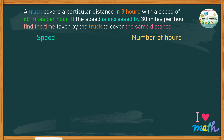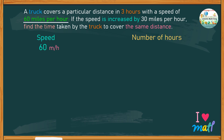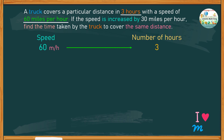Apparently, with a speed of 60 miles per hour, the truck can cover a certain distance in three hours. What happens when the speed is increased by 30 miles per hour?